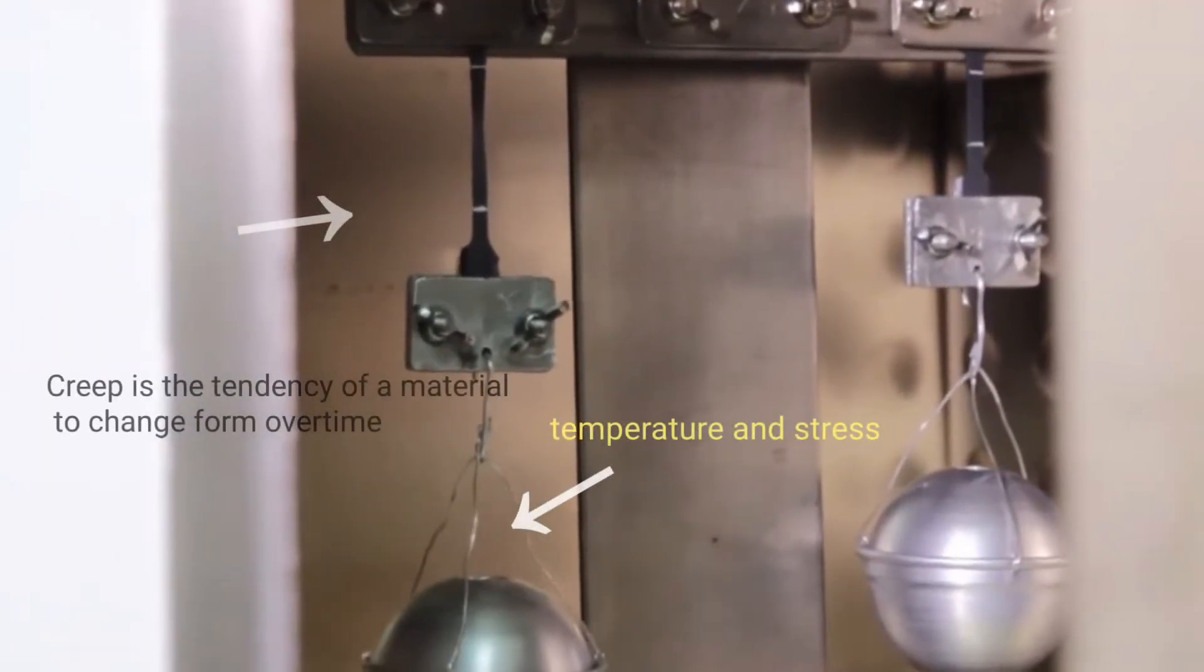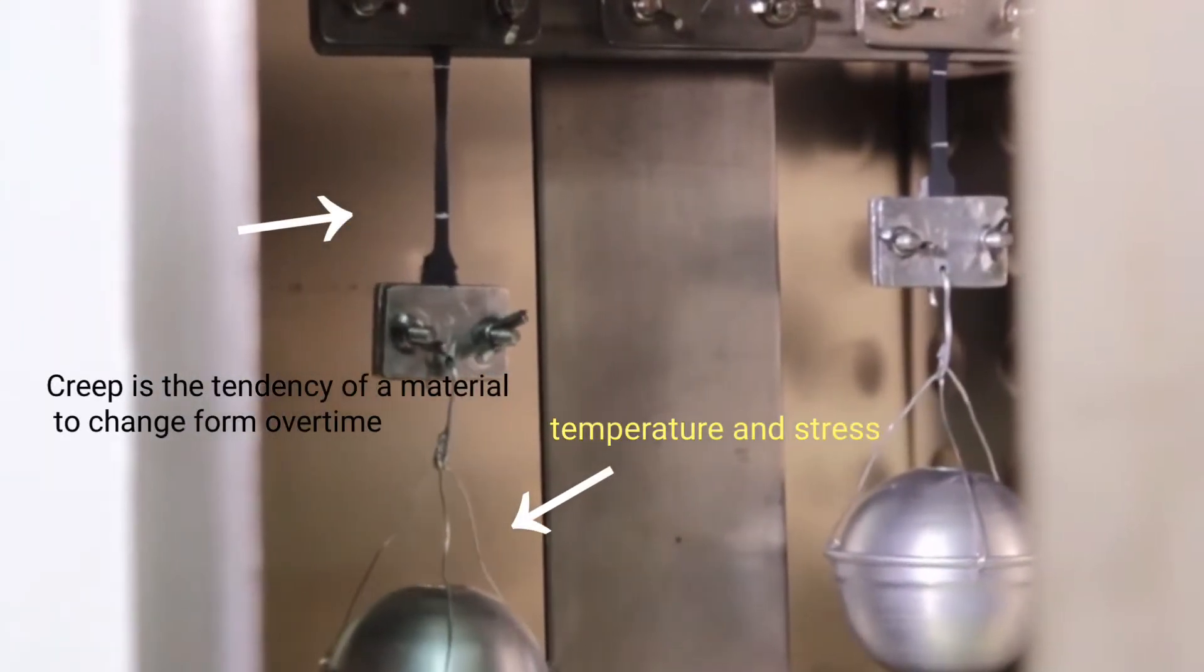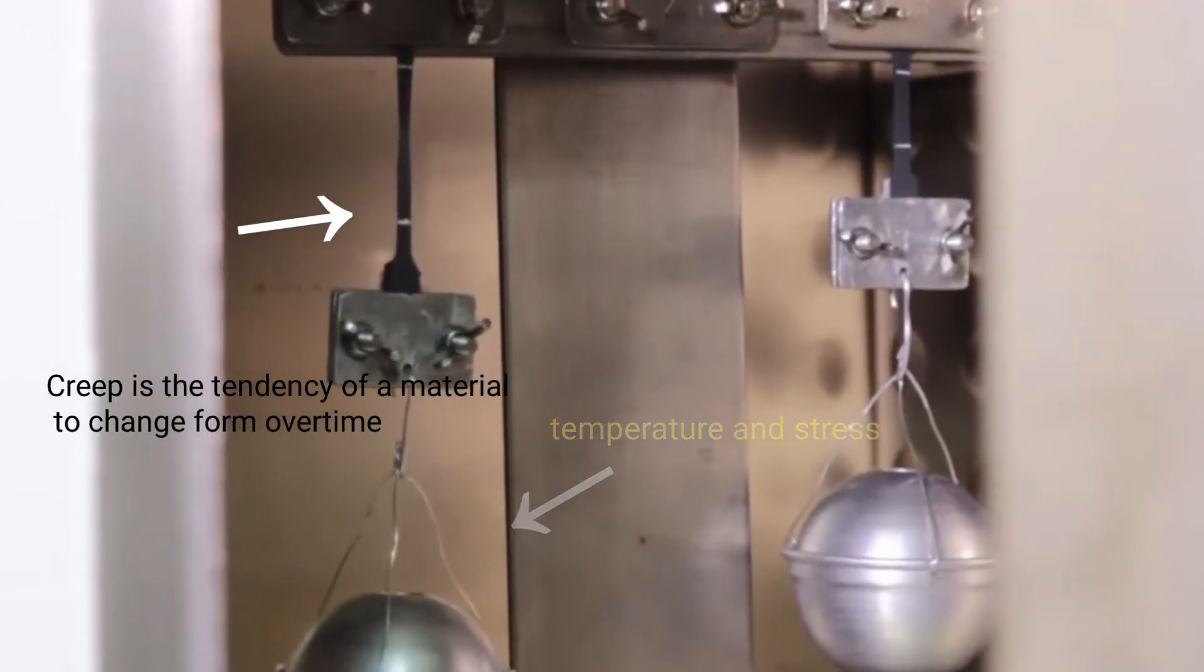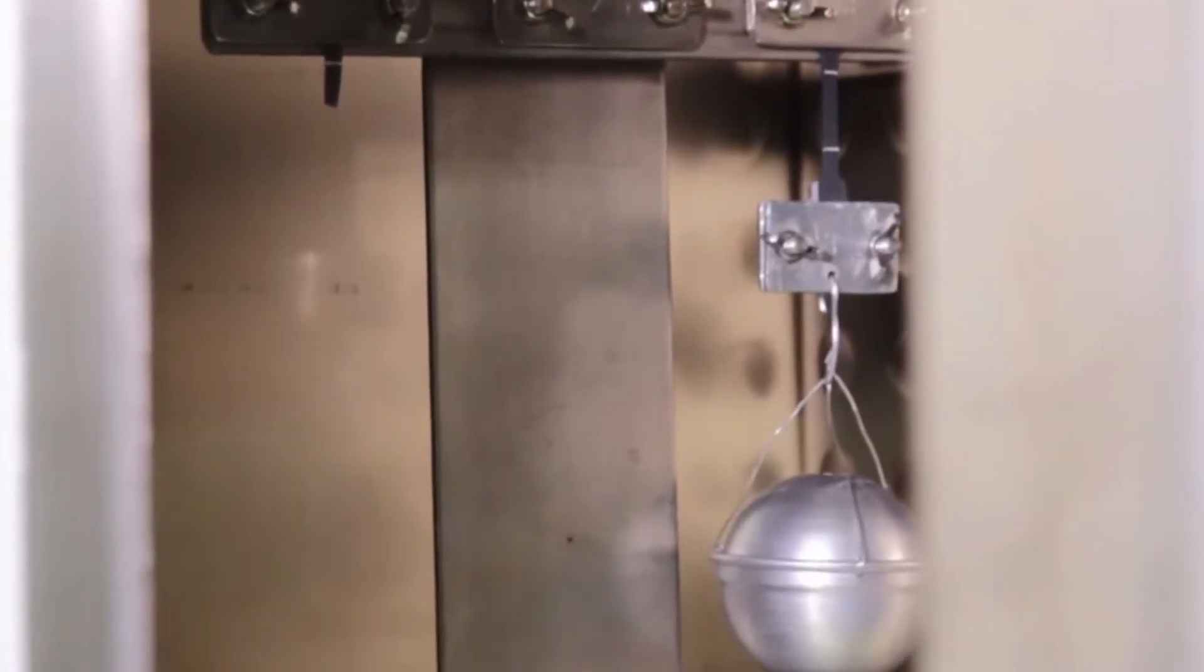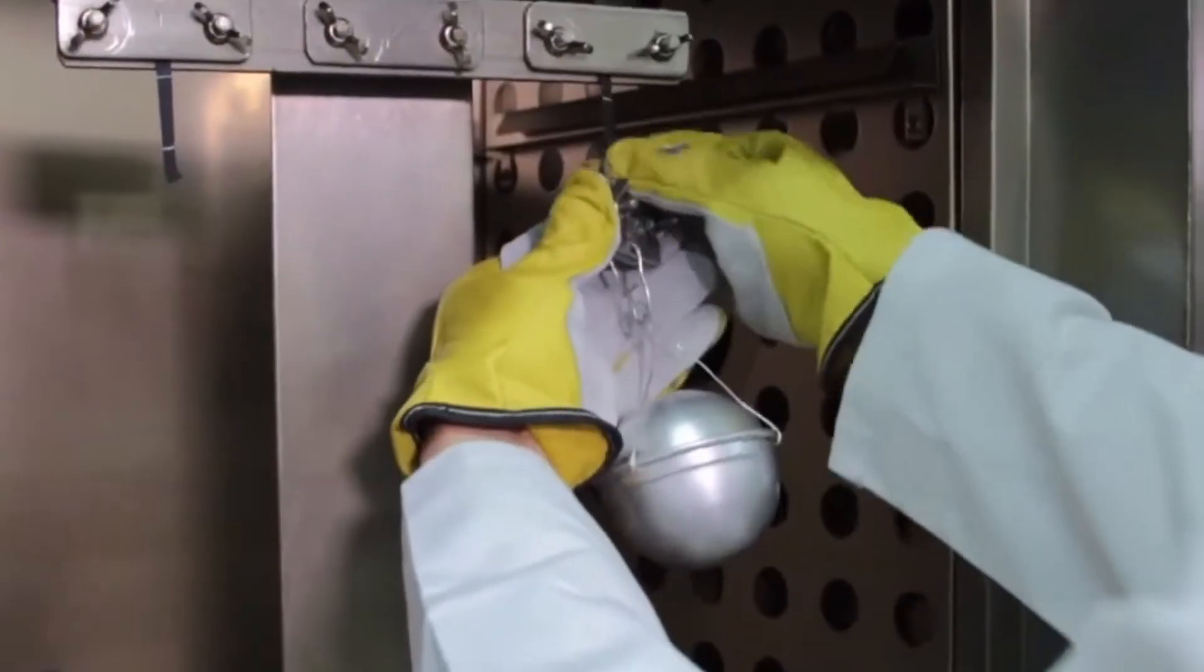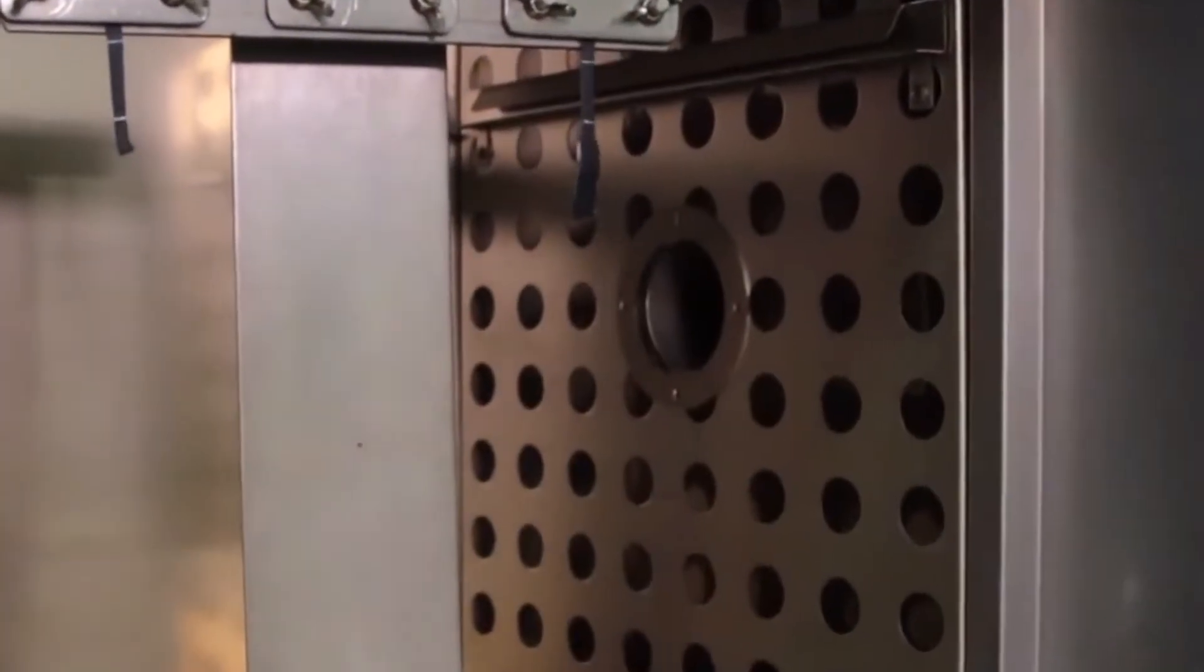Creep is the tendency of a material to change form over time after facing high temperature and stress. Creep increases with temperature and is more common when a material is exposed to high temperature for a long time or at the melting point of the material.